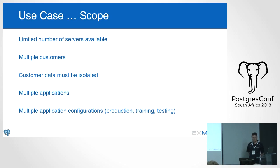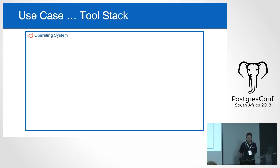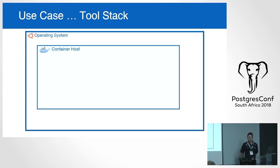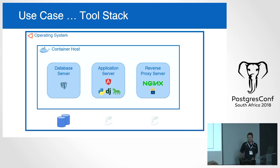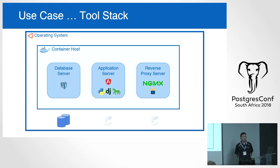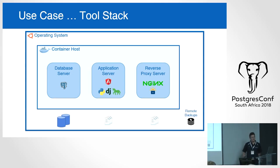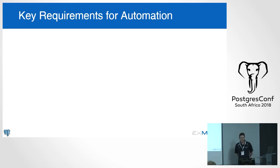We deploy multiple applications and different configurations — production, training, testing — on the same server. The tool stack we use is Ubuntu Server as the operating system, Docker as our container host, database server containers, application server containers, and Nginx as the reverse proxy. The entire deployment from a fresh Ubuntu install is automated with Ansible playbooks. We also use Tarsnap for remote backups.